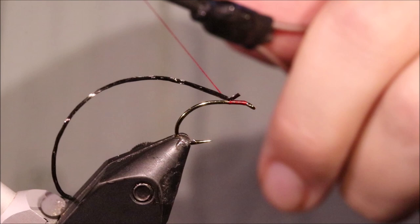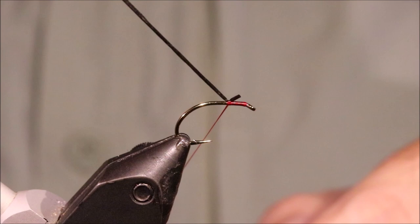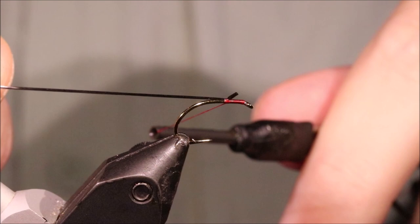I've got my hook and my vise. This is a Kamasan B100 size 12. You can also use the heavier wire hook if you wish, like a B110. Run on some Uni 8-0, and I've just caught on a length of black span flex just before I come off the flat spot of the hook.